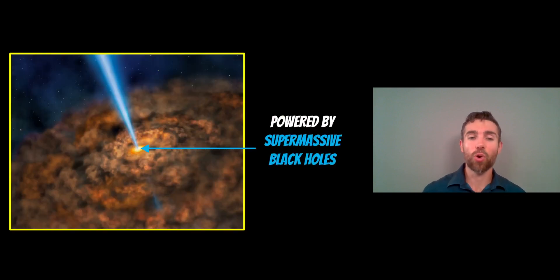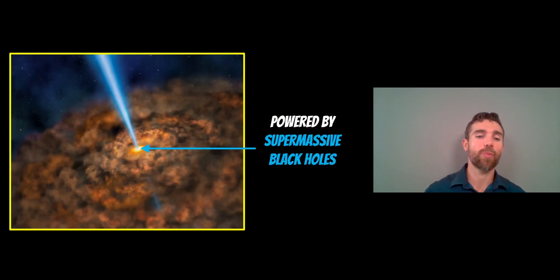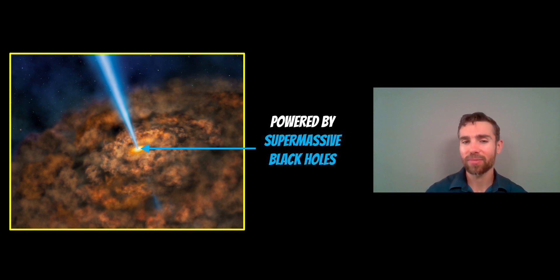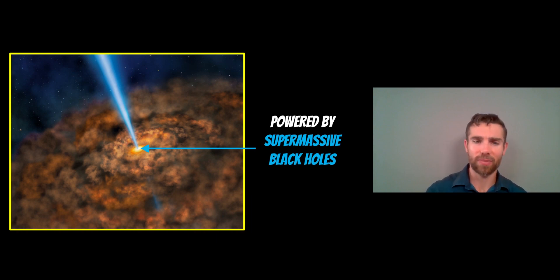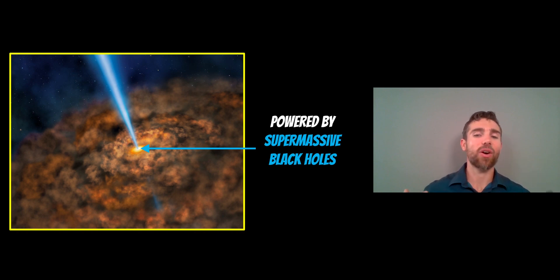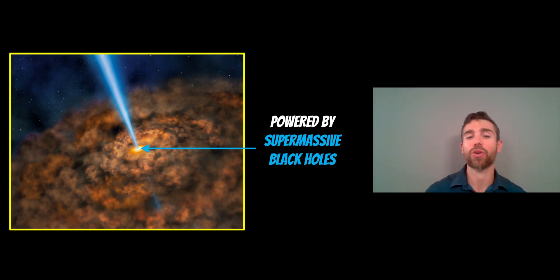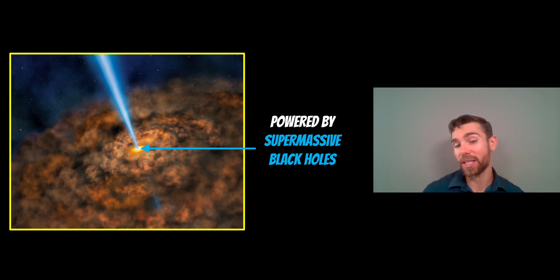So what causes them? How are they powered? Well, in the centre of most galaxies we have supermassive black holes — which is perfectly fine, they sit there all the time. We have one in the centre of our Milky Way, but ours isn't active like these, which is a good thing. These quasars are powered by matter actively falling onto those black holes.